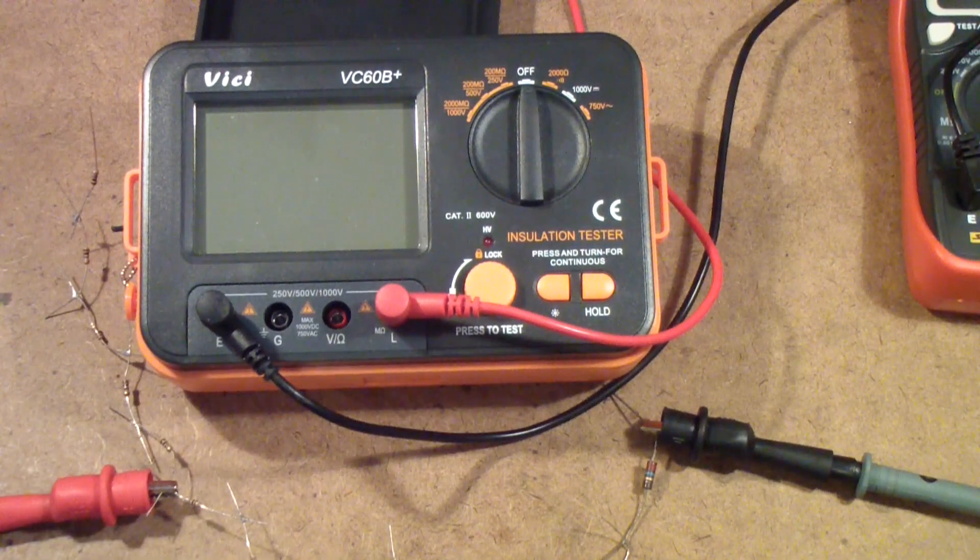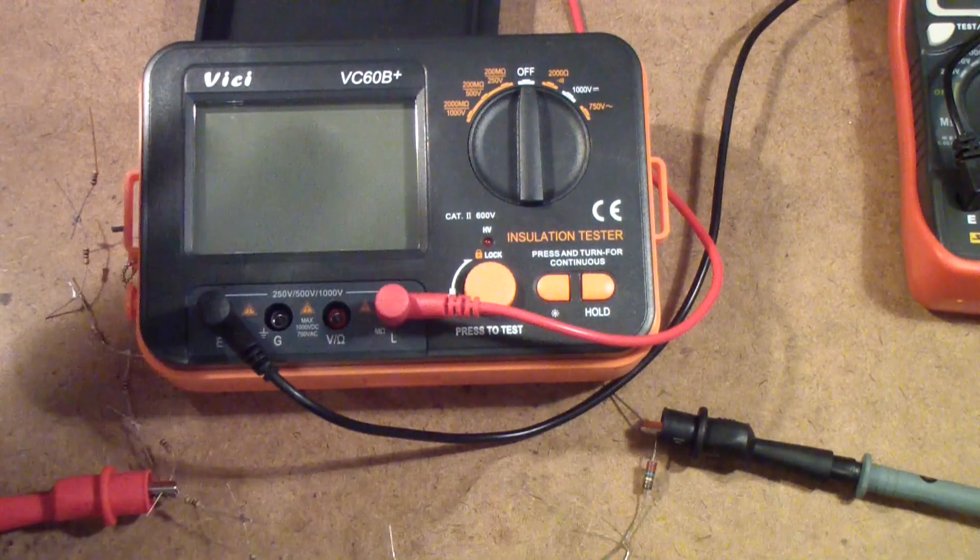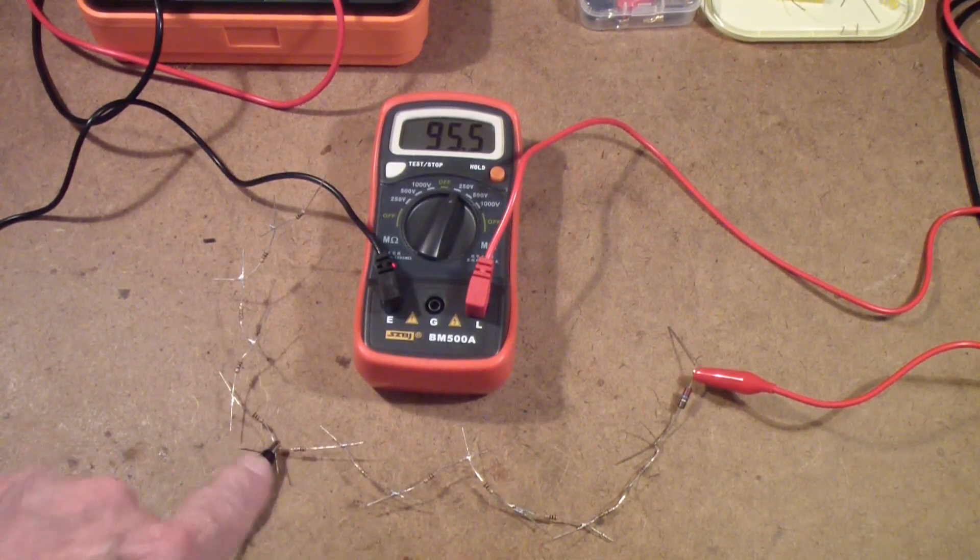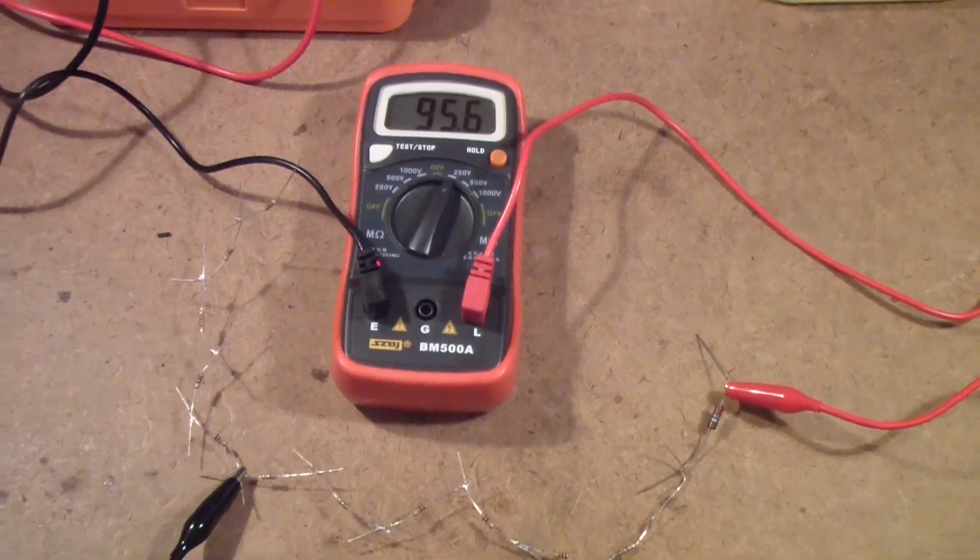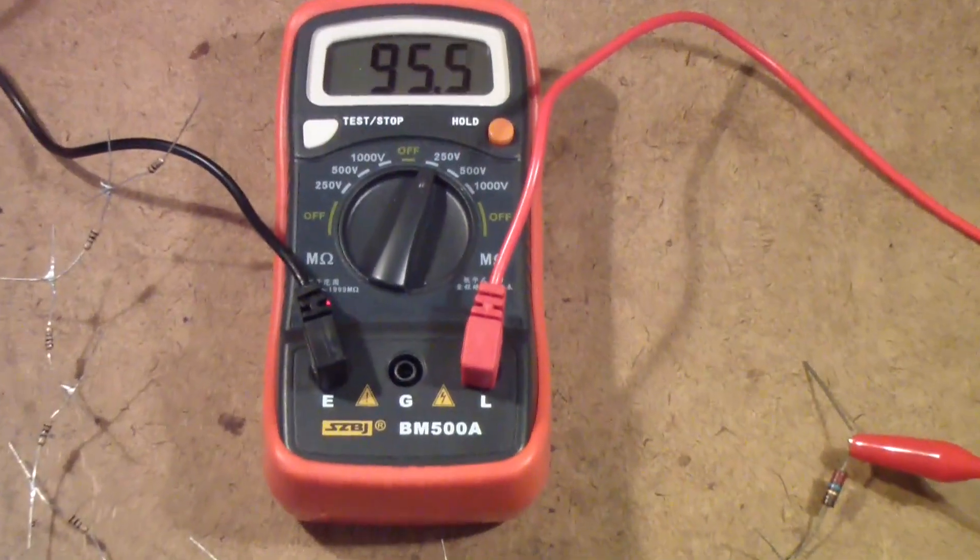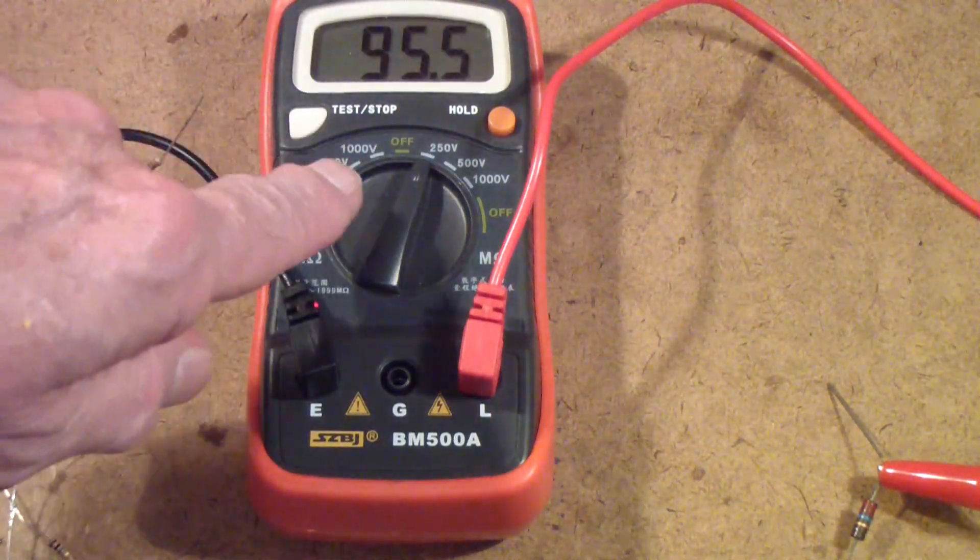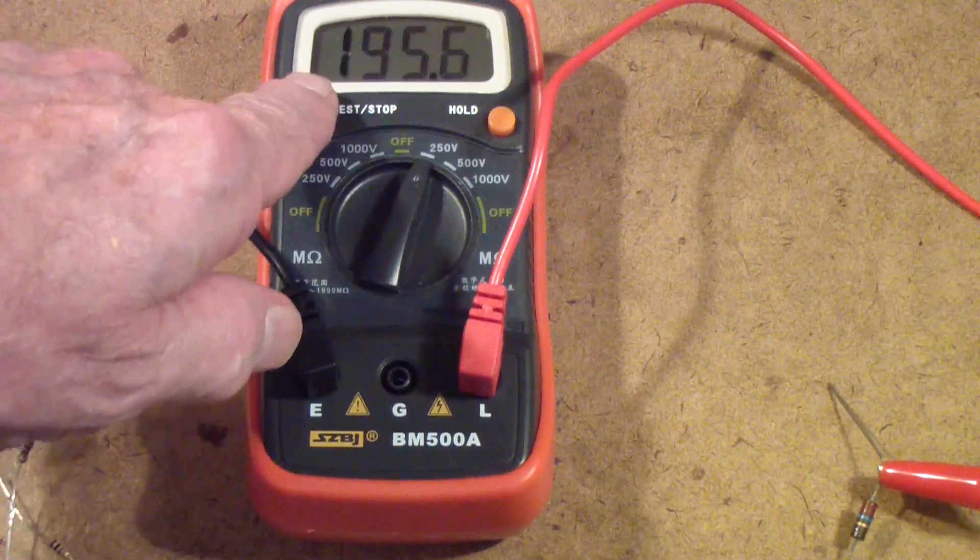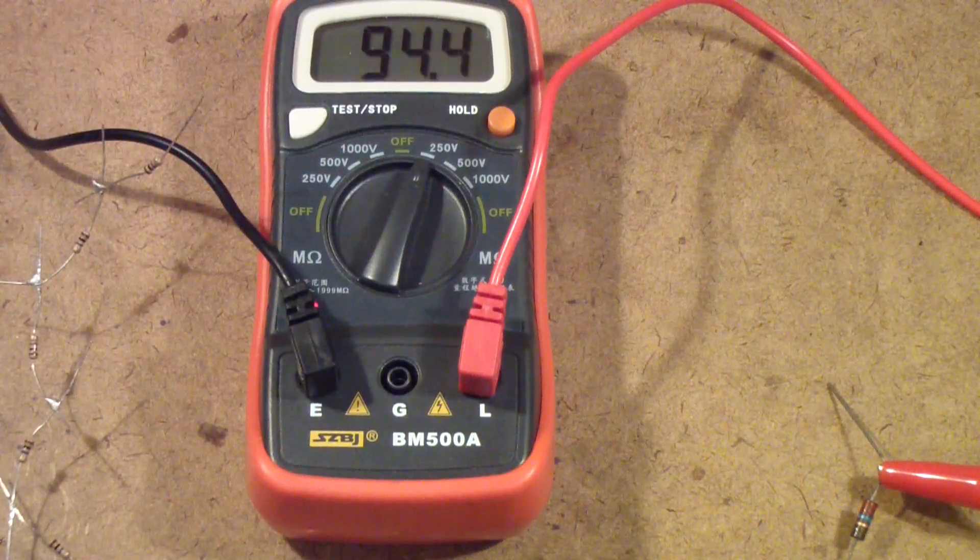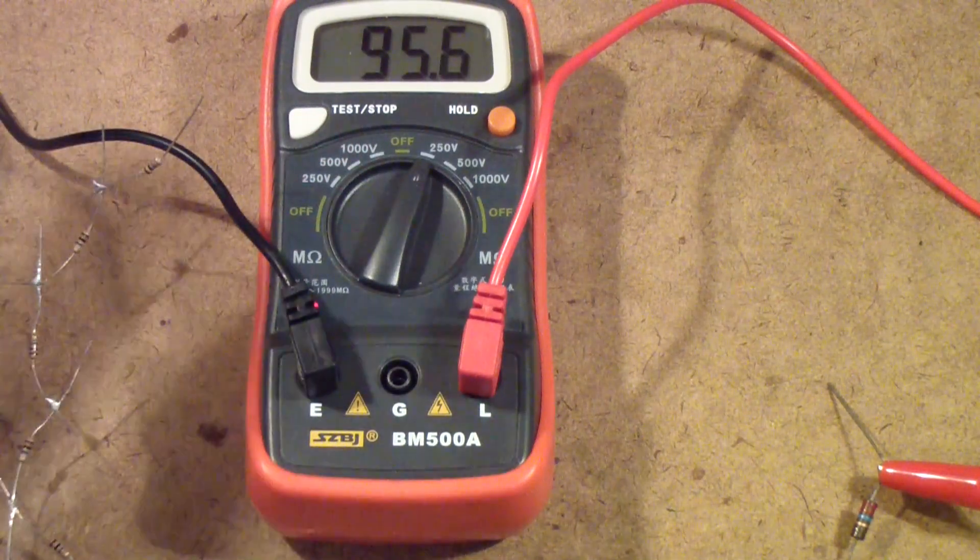But first, let me do the same test with the BM500A. So I have the BM500A connected to the same 95 megaohm position. And I'll zoom in a little bit here, being careful not to touch the circuitry, because although right now it's turned off, there's no indicator on this meter that you have high voltage. So when you hit the test button, there is, in this case, 250 volts on those test leads, but it doesn't warn you of that.